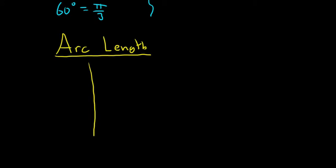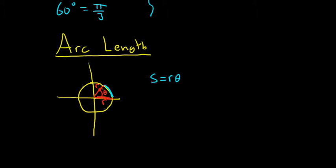Here we have a circle of radius r. We have this angle theta, and we want to find the length of the blue arc. It turns out that the arc length is s equals r theta. Note: if theta is equal to 1, then the length of the arc is r — so s equals r. That's the definition of one radian: whenever you have an angle that intercepts an arc of length r in a circle of radius r, you have exactly one radian.